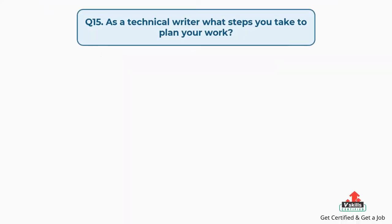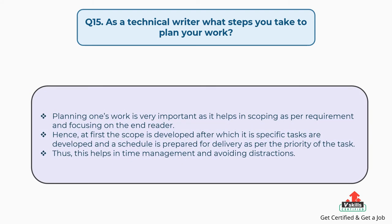Question number fifteen: as a technical writer, what steps do you take to plan your work? Planning one's work is very important as it helps in scoping as per requirement and focusing on the end reader. At first, the scope is developed, after which specific tasks are developed and a schedule is prepared for delivery as per the priority of the task. This helps in time management and avoiding distractions.